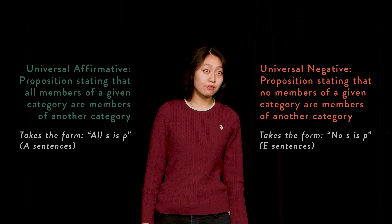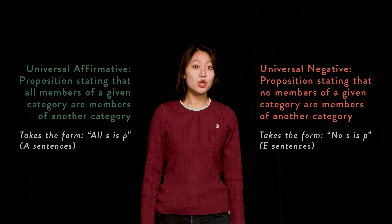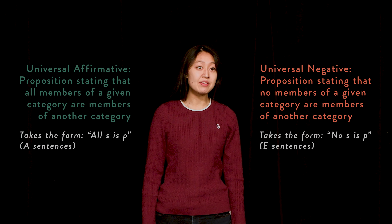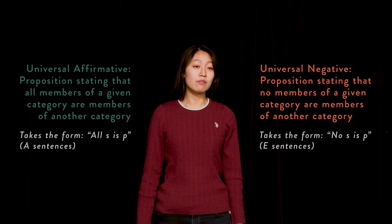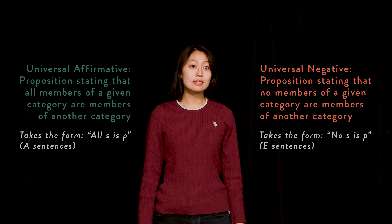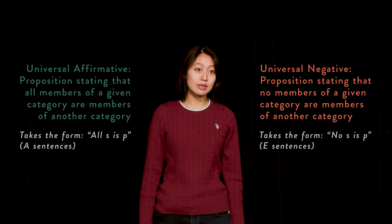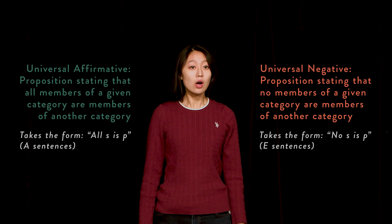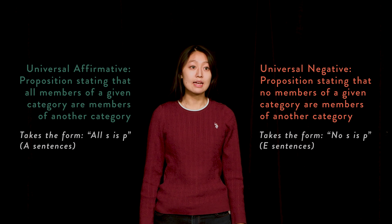Universal Negative: a proposition stating that no members of a given category belong to another category. These propositions are of the form 'no S is P,' where S is the subject and P is the predicate. These are also sometimes referred to as E sentences.